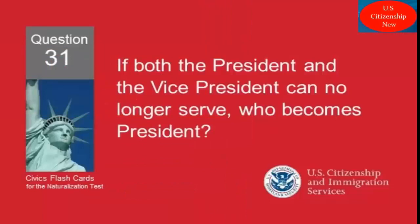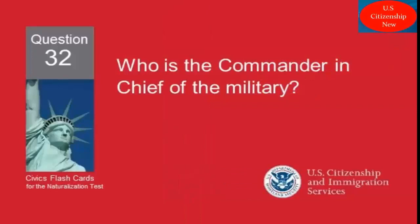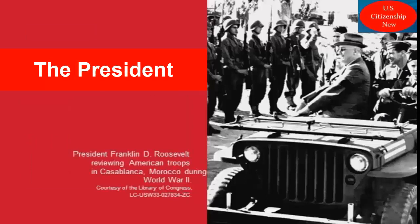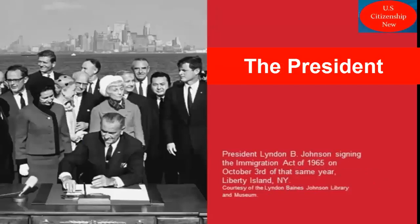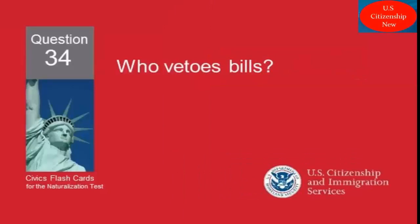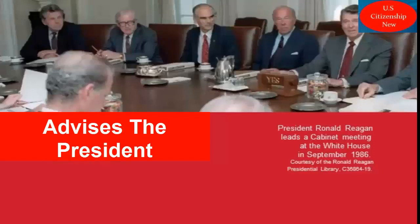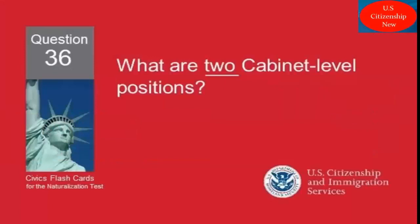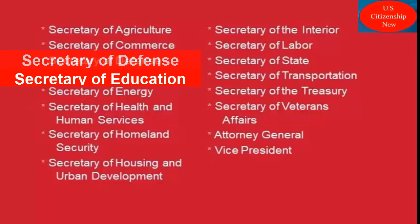If both the president and the vice president can no longer serve, who becomes president? The Speaker of the House. Who is the commander-in-chief of the military? The president. Who signs bills to become laws? The president. Who vetoes bills? The president. What does the President's Cabinet do? Advises the President. What are two Cabinet-level positions? Secretary of Defense, Secretary of Education.